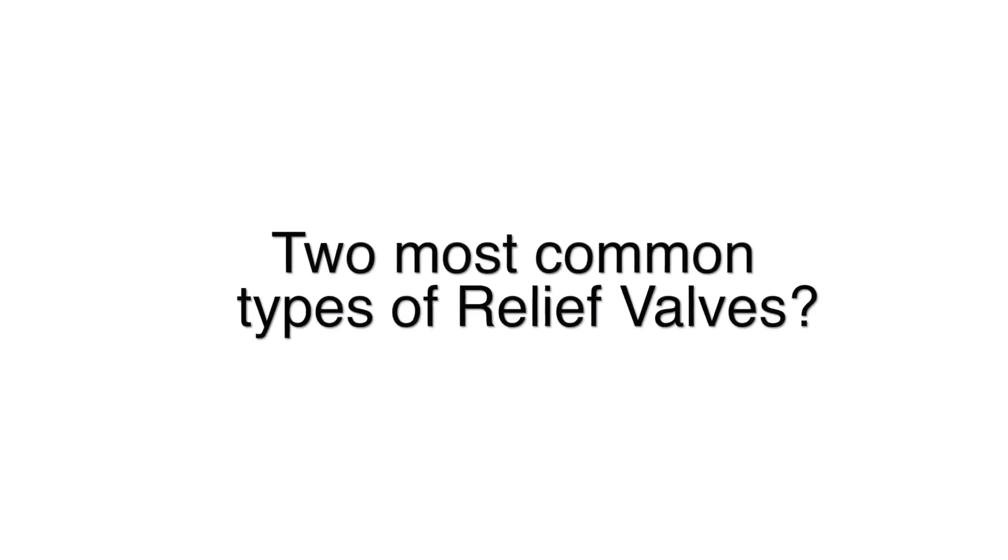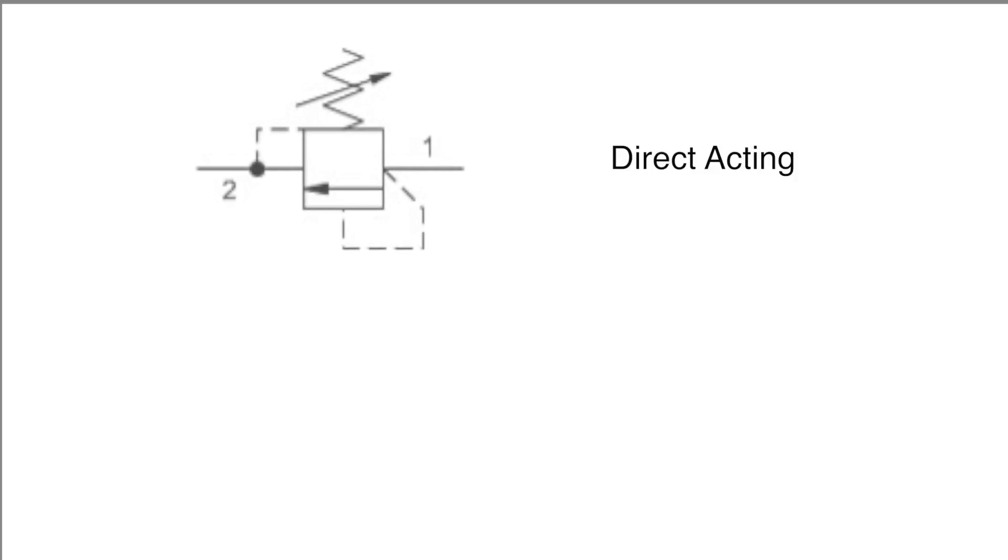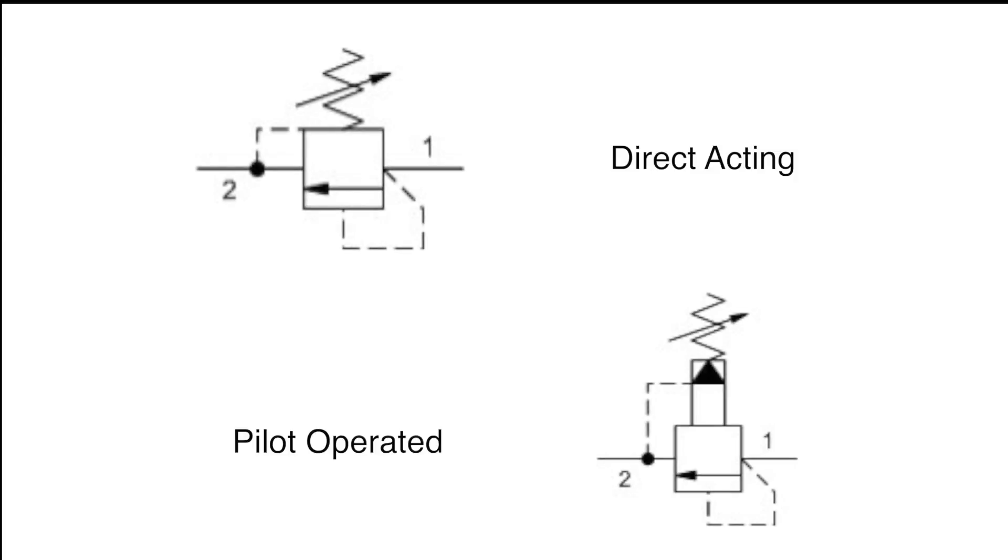After understanding where relief valves are used, we need to understand the two most common types of relief valves. The two most common types are direct acting and pilot operated. A direct acting type is where the internal spring is used to act directly on the fluid where the pressure control is desired.